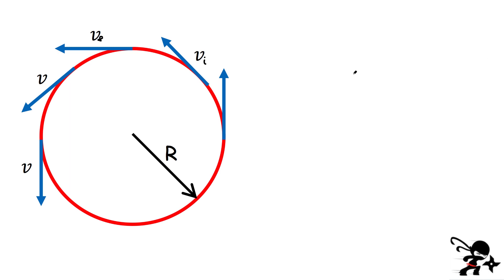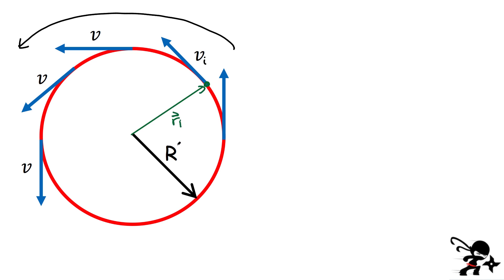I first want to consider an object going around in a circular path in a counterclockwise direction. I want to consider a couple different positions. Let's assume the object starts over here at some position described by the vector r initial. Then later in time, it's going to be up at the top of the circle — I'll call this position r final. During some amount of time delta t, it's gone through a little bit of angle, which we call delta theta. His angle position changed.